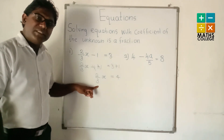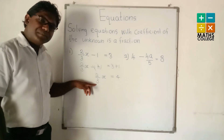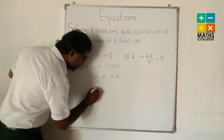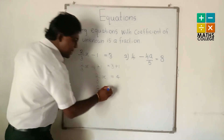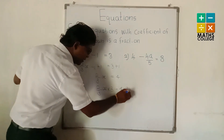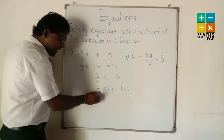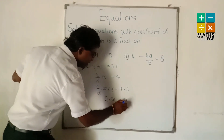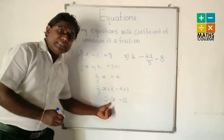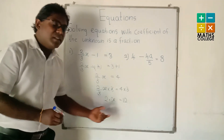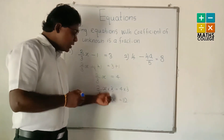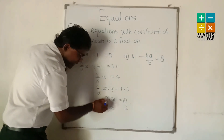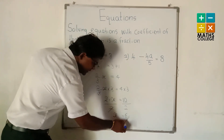Then we remove the 2/3 by applying the opposite operation. The 2/3 involves division by 3, so the opposite operation is multiply by 3 on both sides. 3 cancels 3, leaving 2x = 12. Now 2x means 2 multiply x — the opposite operation of multiplication is division, so divide by 2 on both sides. 2 cancels 2. x = 6. The answer is 6.